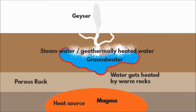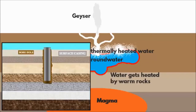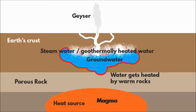When water gets heated up, the pressure forces the underground water to gush out through a narrow opening. This warm water comes out to the surface through porous and fractured rocks that have a narrow opening. These porous fractured rocks act as a tube-like hole in the earth's surface that runs deep into the crust. You have to go at least 2-3 km beneath the surface of the earth for water to be in contact with hot rocks.